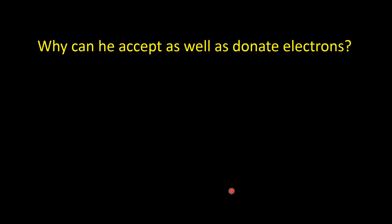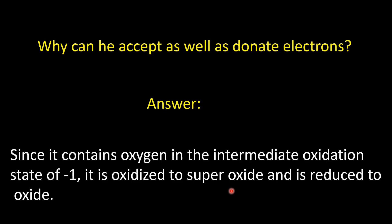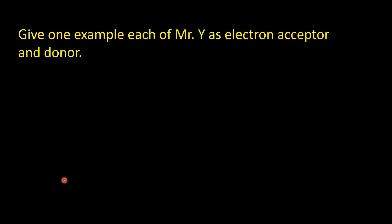Next question: why can hydrogen peroxide accept as well as donate electrons? The answer is: in hydrogen peroxide, oxygen is present in the intermediate oxidation state of minus 1. This oxygen, being in an intermediate oxidation state, can be oxidized to superoxide or reduced to oxide. That is why hydrogen peroxide can act as both an oxidizing and a reducing agent.